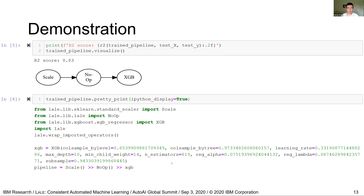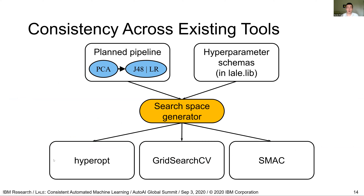Now let's look at how LALI works internally, specifically how it uses different backend optimizers via a search space generator. The input to the search space generator consists of a planned pipeline specified in Python code and hyperparameter schemas specified using JSON schema. LALI.lib has JSON schemas for a large set of machine learning operators, so you rarely need to specify your own.